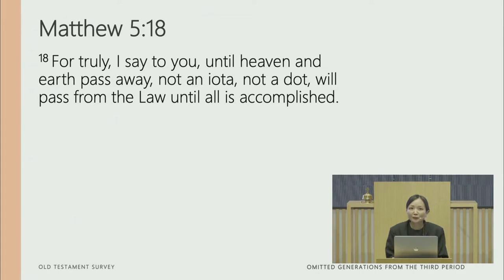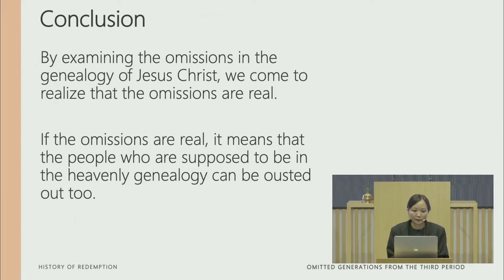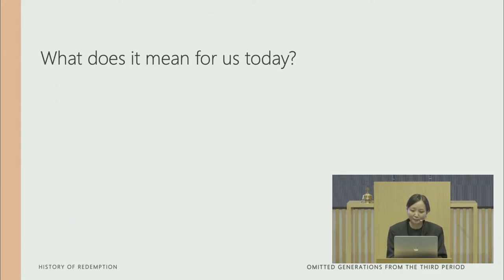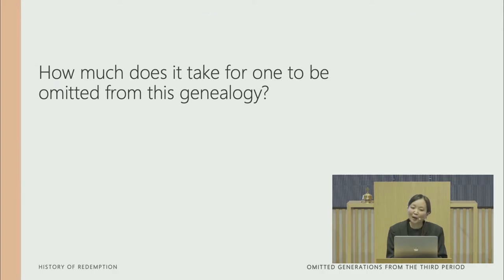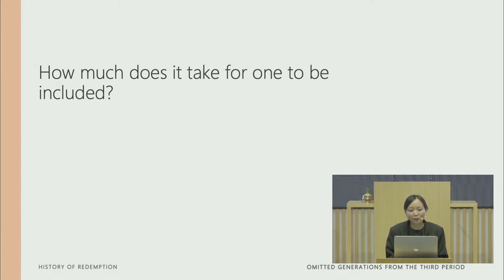As it is written in Matthew chapter 5, verse 18: 'For truly I say to you, until heaven and earth pass away, not an iota, not a dot, will pass from the law until all is accomplished.' Everything written in the Bible is for a reason — even the omissions in the genealogy of Jesus Christ. By examining these omissions, we come to realize that they are real. If the omissions are real, it means that people who are supposed to be in the heavenly genealogy can be removed from it. What does this mean for all of us today? How much does it take for one to be omitted from the genealogy if God loves us so much? And how much does it take for one to be included?